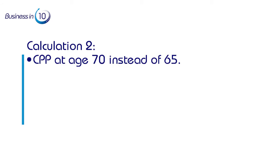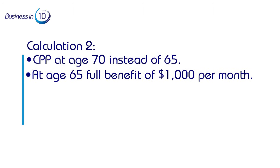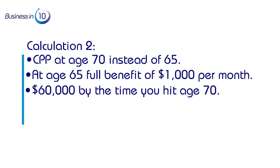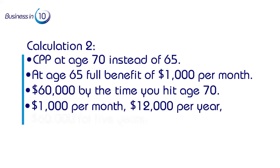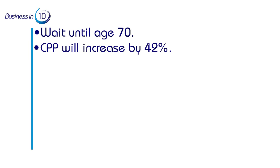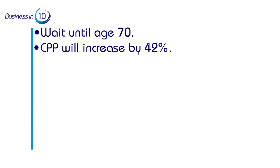Calculation two: if you choose to take CPP at age 70 instead of 65, at age 65 you would receive the full benefit of $1,000 per month. By doing that, you would be paid a total of $60,000 by the time you hit age 70 — that's $1,000/month × $12,000/year × 5 years. If you delay to age 70, you get a 42% increase, so instead of $1,000 you receive $1,420 per month.